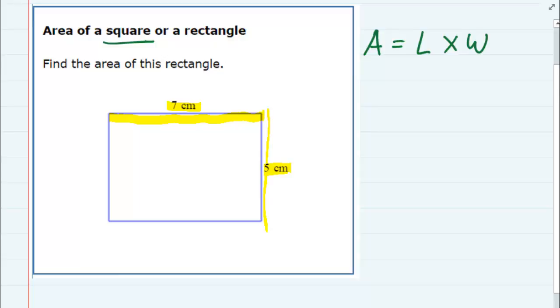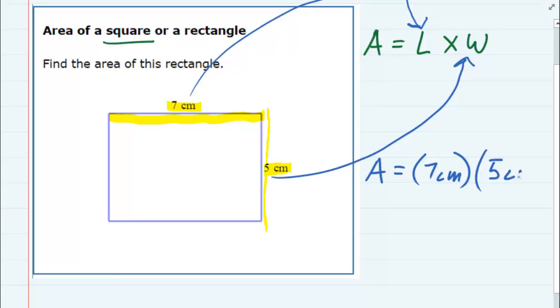So I'm going to take the length and substitute that into our formula and the width and substitute that in so that we'll now have area equals length seven centimeters times the width five centimeters.